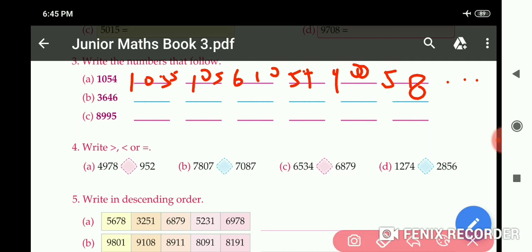Like this we will complete the part. Next, come to C part: 8995, 8996, 8997, 8998, 8999. After that 9000 and 9001. Like this we fill the parts.